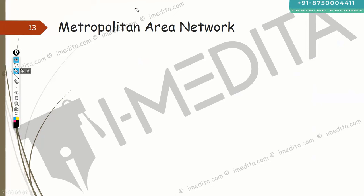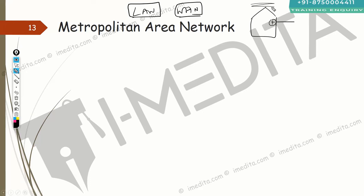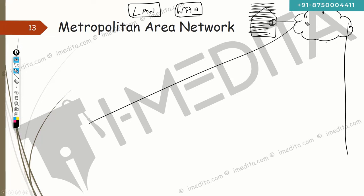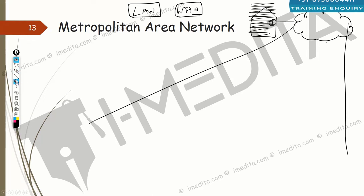Metropolitan area network is interesting because the concept of LAN and WAN depends on your perspective. Consider a small local ISP: they install a switch in a residential building — maybe in the parking or rooftop — and run cables to each apartment for internet connections. From your perspective as a customer, this is WAN. But from the service provider's perspective, those switches and fiber cables connecting multiple buildings across the city are their LAN.